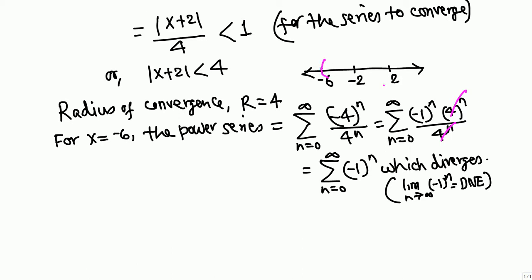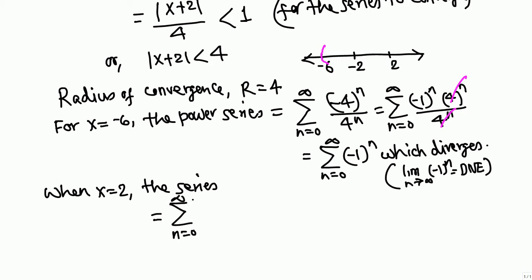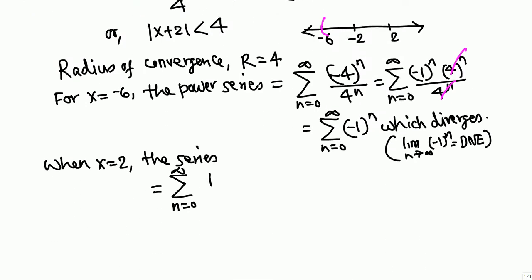Now do the same thing when x equals 2. When x equals 2, the power series becomes the sum from n equals 0 to infinity of (2+2)^n over 4^n, which is 4^n over 4^n.